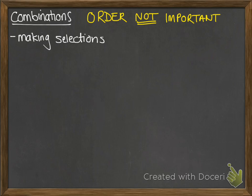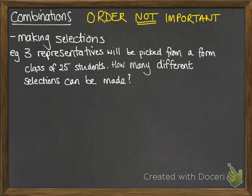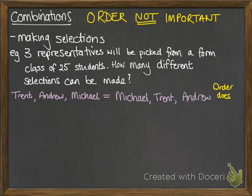This is all about making selections. For example, three representatives will be picked from a form class of 25 students. How many different selections can be made? The order that we pick those three people doesn't make a difference to the outcome of the group. For example, if we picked Trent, Andrew, Michael, that would be the same as picking Michael, Trent, Andrew. It gives us the same three representatives. The order doesn't matter.